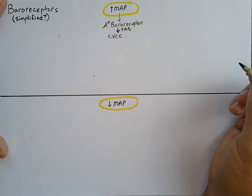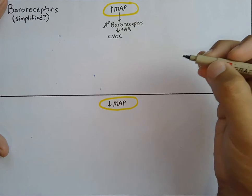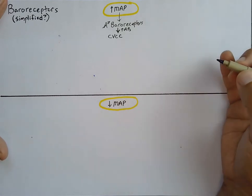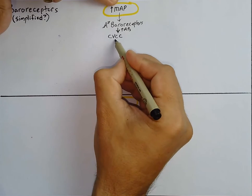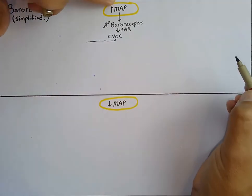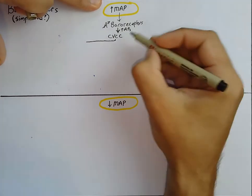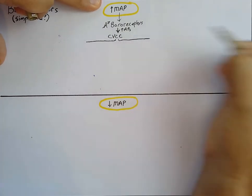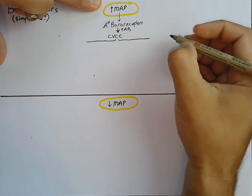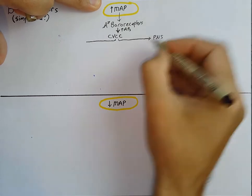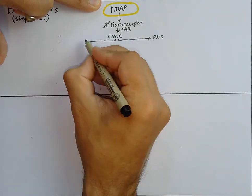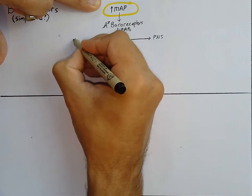The CVCC has a cardioacceleratory unit and a cardioinhibitory unit in addition to a vasomotor unit. Let's simplify that by saying the CVCC has one portion of its flowchart that talks to the sympathetic nervous system and the other part that talks to the parasympathetic nervous system. So one side goes to the parasympathetic nervous system through the vagus nerve, and the other side is going to go to the sympathetic nervous system.